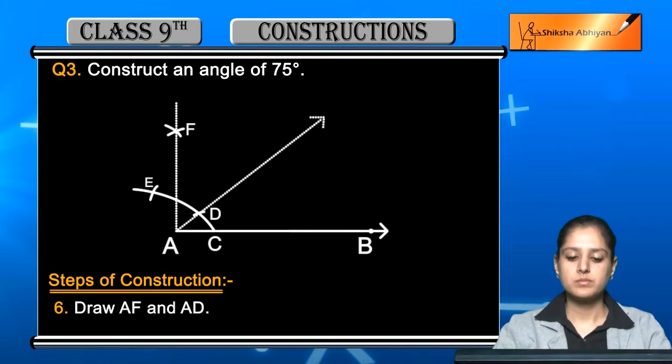Now after this, you can see where AF arc is intersecting the arc, we have to mark the point G. Now you have to take D and G to center.